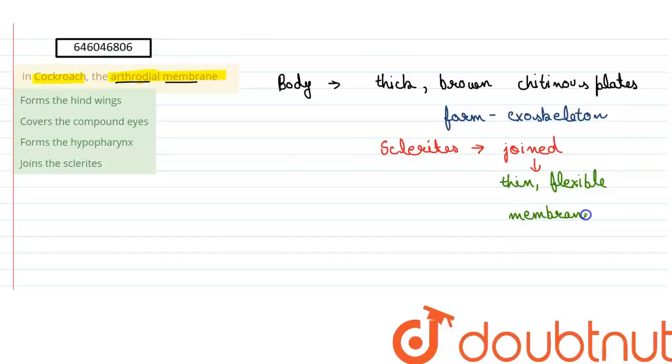So the function of arthrodial membrane is that it joins the adjacent sclerites which are present on the body of the cockroach. So option D here is going to be the right answer for this question.